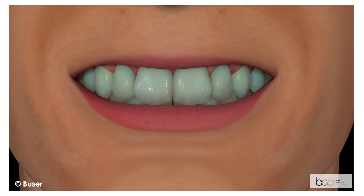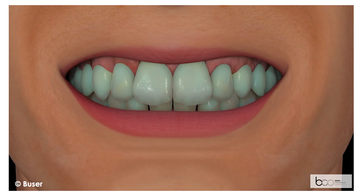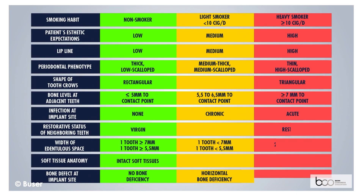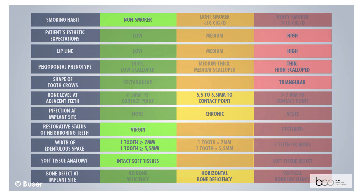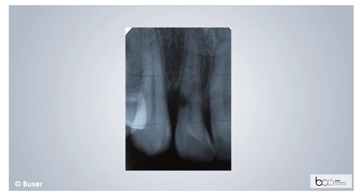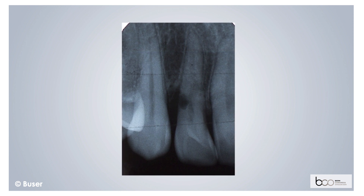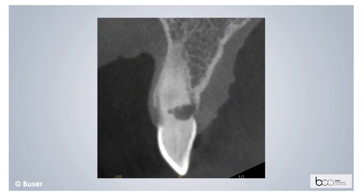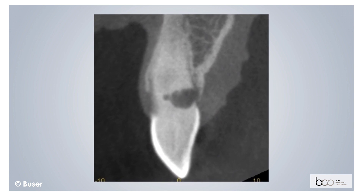This 37-year-old female presented with a lateral incisor which had to be extracted. The clinical situation represents an advanced difficulty level according to the SAC classification of the ITI. The periapical radiograph shows the external root resorption at the lateral incisor, and the extension of the root resorption is clearly visible in the CBCT.